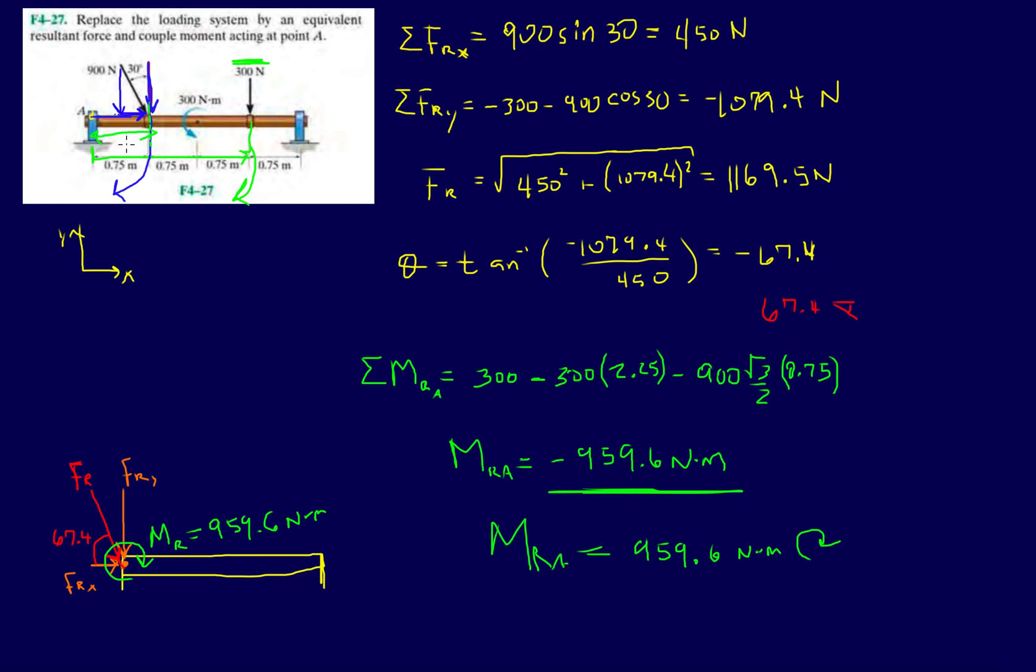In the diagram, I'm going to replace it with a resultant moment like this: MR of 959.6. That's all for this problem. Remember, break down all the forces first, tack them onto A, then take all the moments about point A. If you have comments or concerns, let me know. Don't forget to subscribe, I'll see you on the next video.